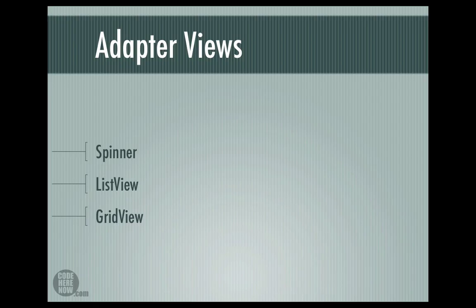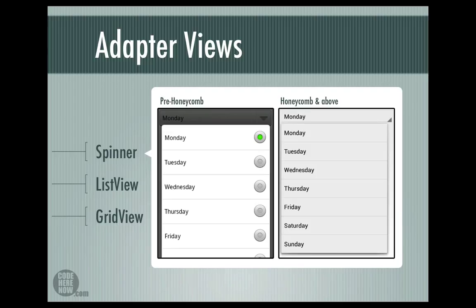The first adapter view is the spinner. The spinner looks like a combo box or a drop-down list on your desktop environments. There is only one item selected in a spinner at a time — when you click on a spinner it brings a drop-down where you can select a single option. The spinner has evolved and its visual appearance on pre-Honeycomb devices is a little bit different from Honeycomb onwards, where it looks just like a drop-down list.